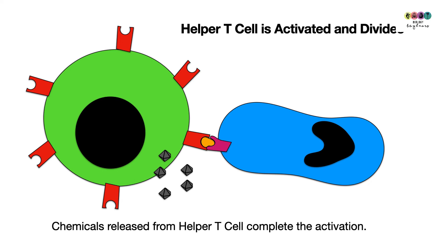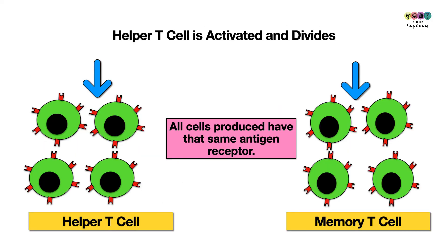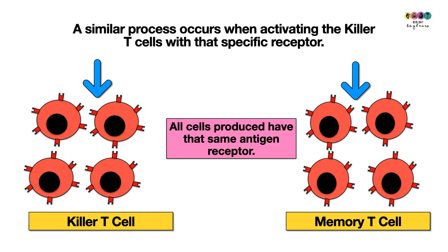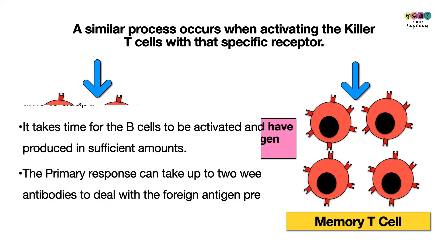These chemicals fully activate the helper T cell, which undergoes division to produce many identical helper T cells and also memory T cells. These activated helper T cells then fully activate specific killer T cells, which too undergo division to produce many identical killer T cells and also memory T cells.